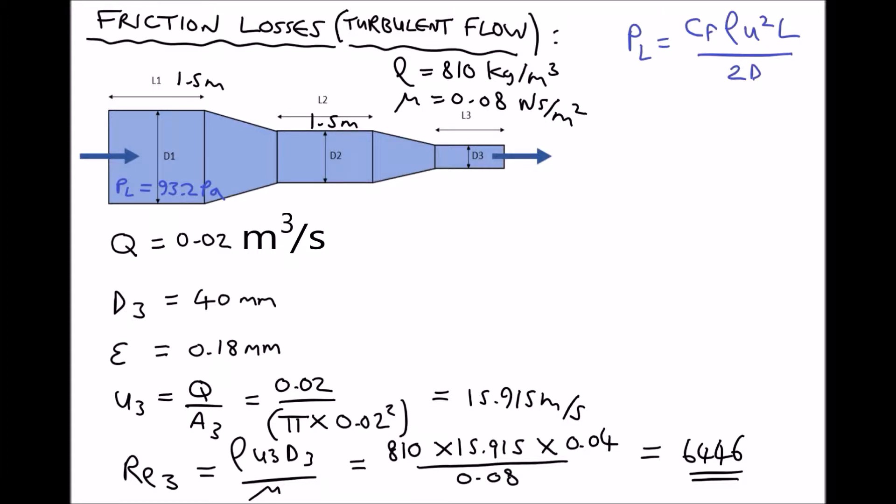Now as we're going to see in a moment, whenever we have turbulent flow or transitional flow, we need to determine an additional variable before we can find our friction factor using the Moody diagram. And that additional variable is something called the relative roughness. Now the relative roughness is the surface roughness of the pipe material divided by the diameter of the pipe. This value of ε is basically a measure of the size of the asperities on the surface of the material.